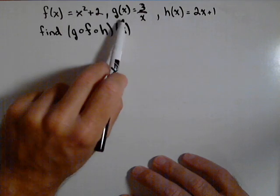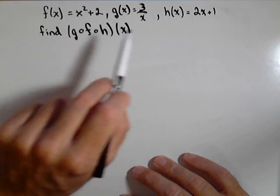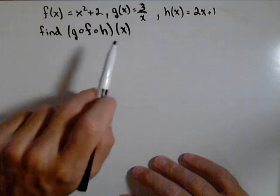So here's our three functions: f of x, g of x, and h of x. And I want to find g of f of h of x.